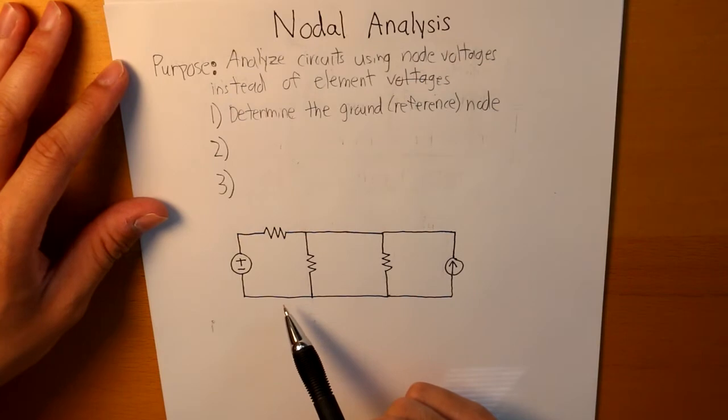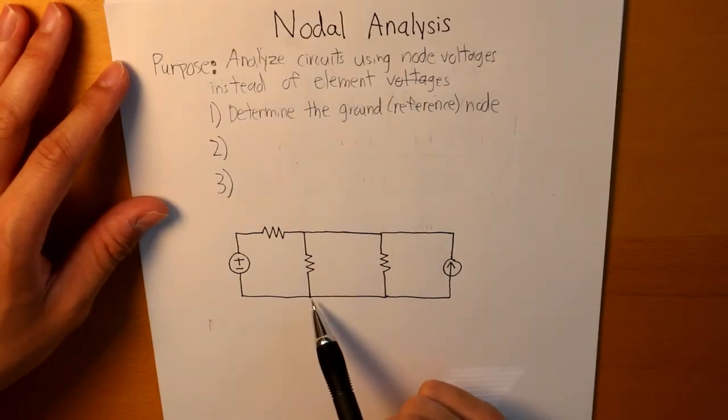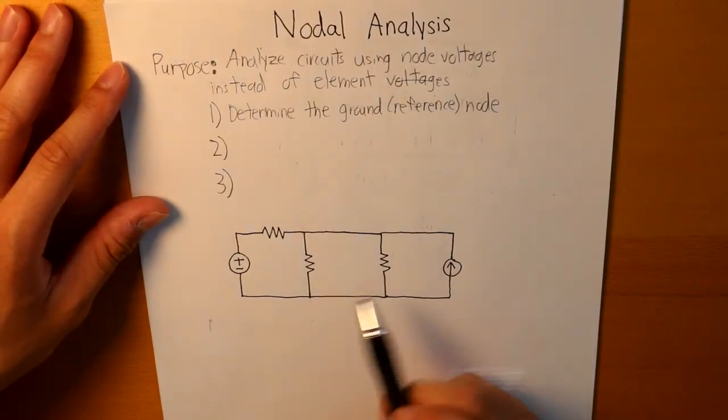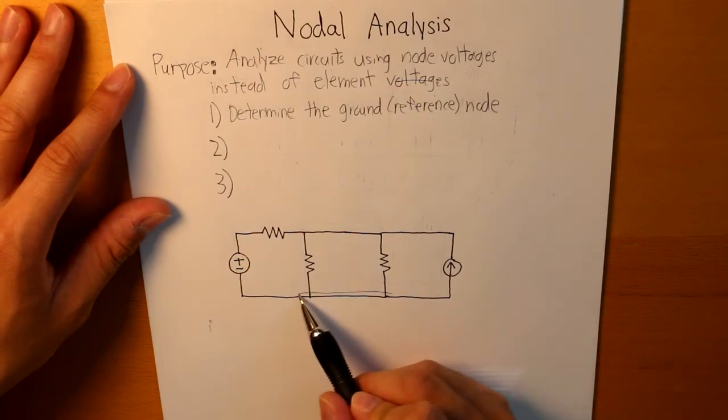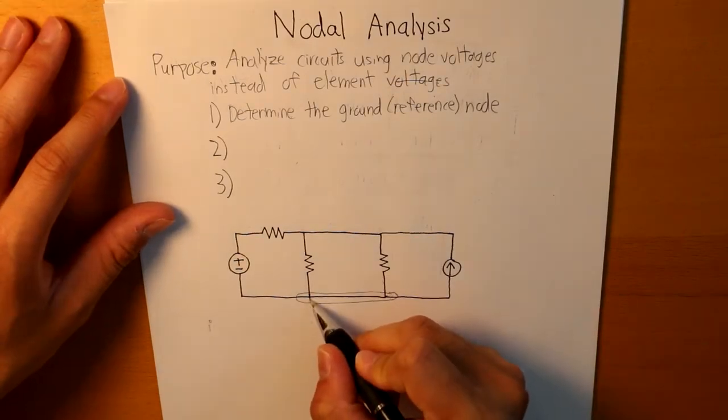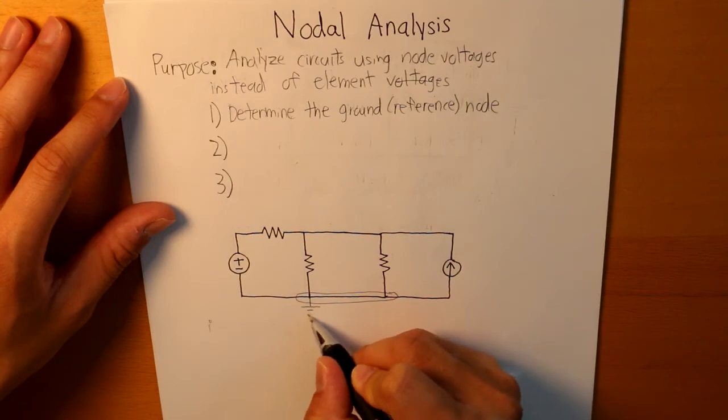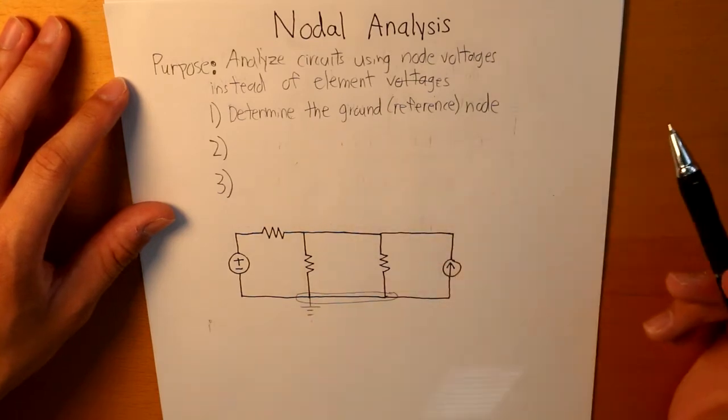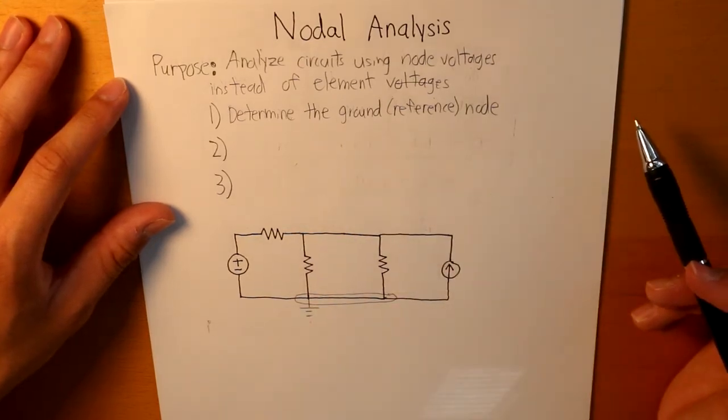So here we have the circuit right here and the lowest potential is at this node, this ground node. We're gonna draw a ground node right here to indicate that this is where it is. It is very important later on.